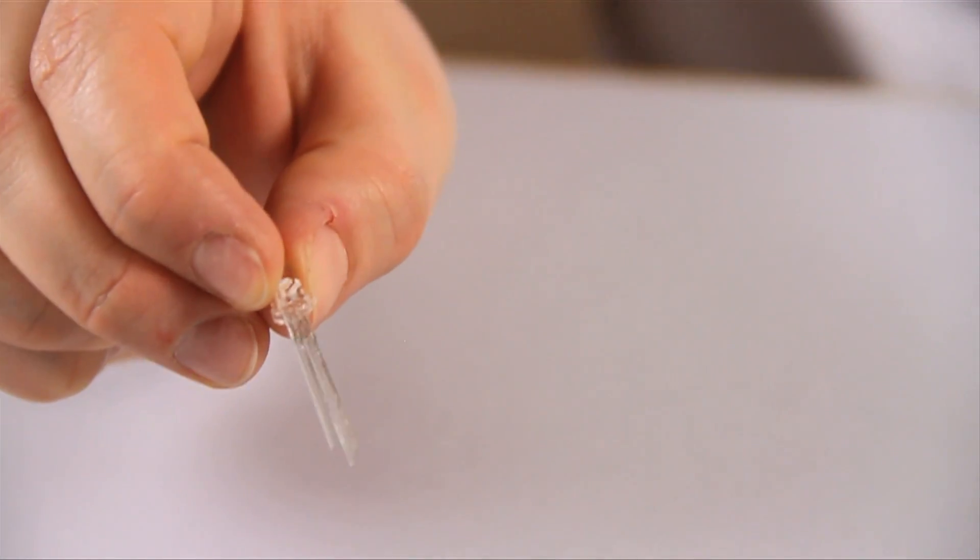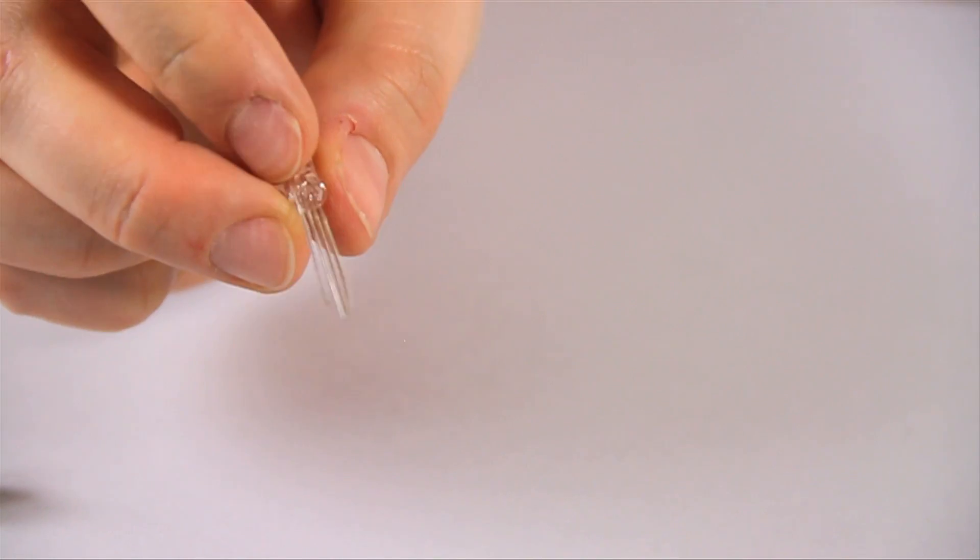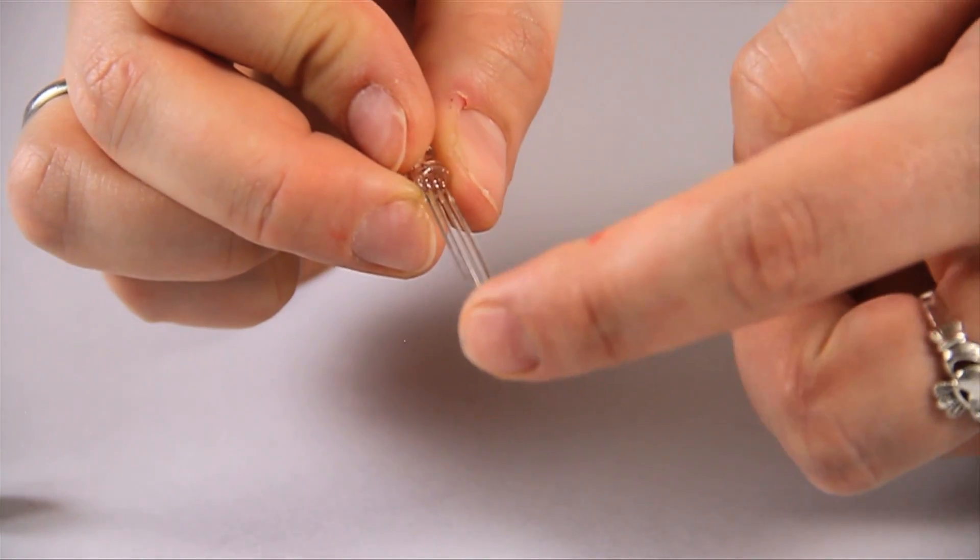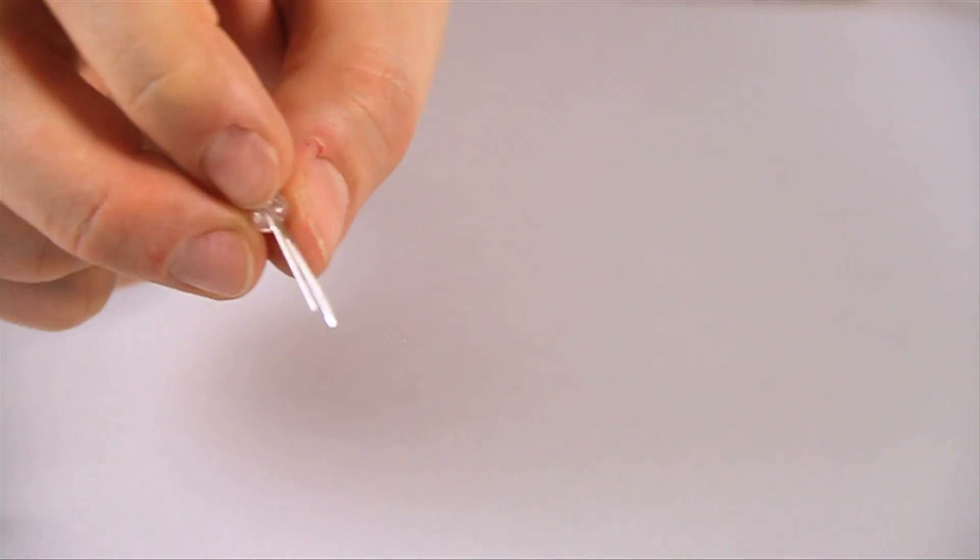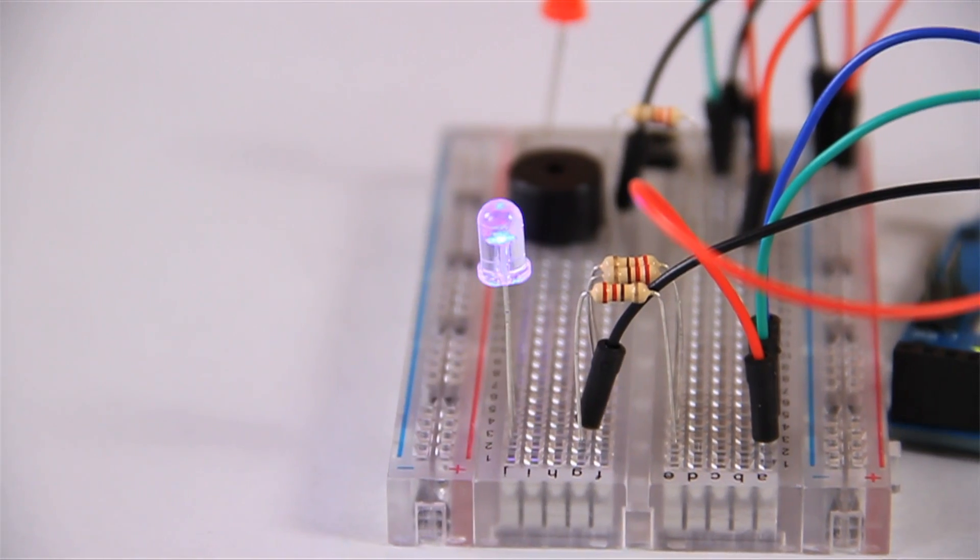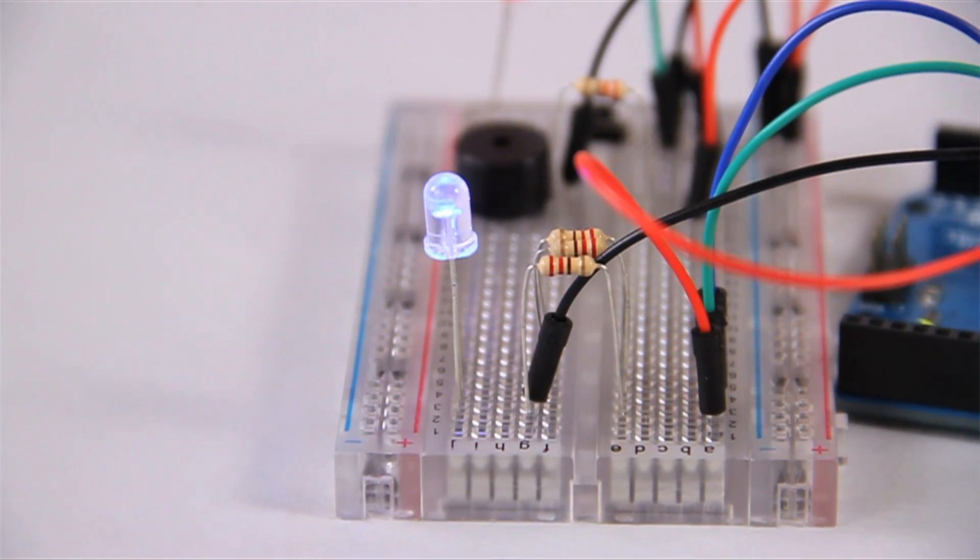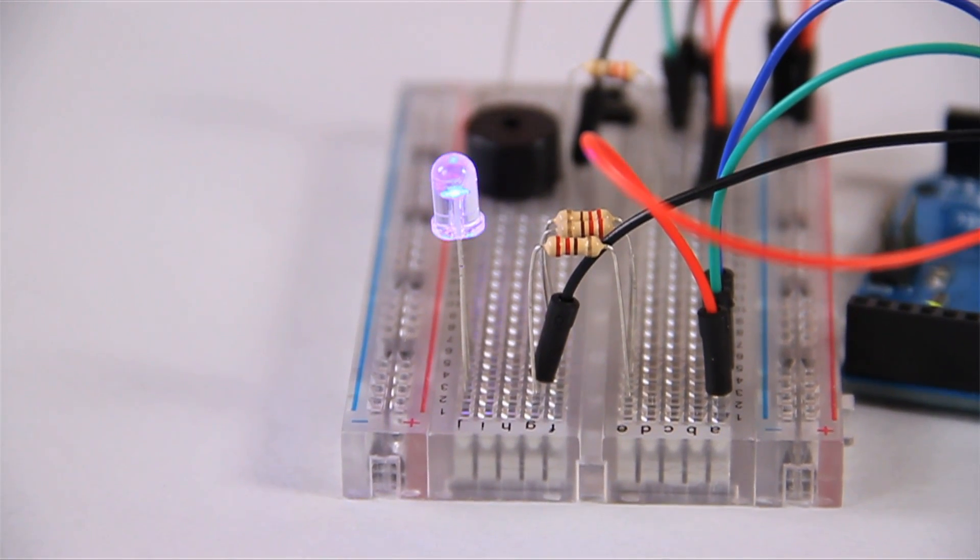This one is an RGB LED. So red, green and blue light emitting diode. So the longest leg is either your positive or negative, it's usually your negative. And then the rest are for your colors. And this means it's got a common pin and then the rest of the three legs can be mixed together to create a variety of different colors.